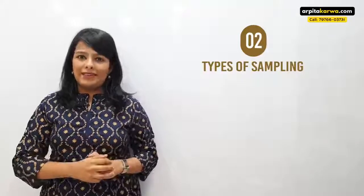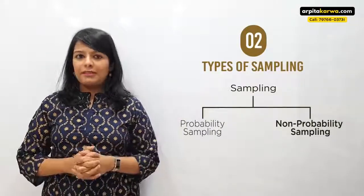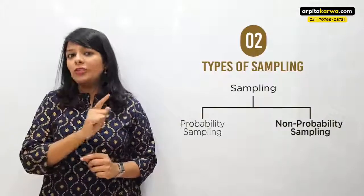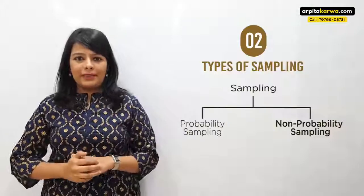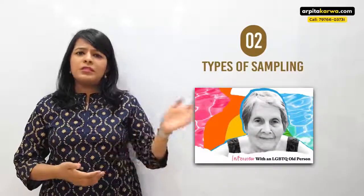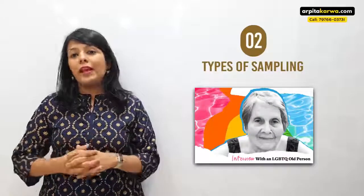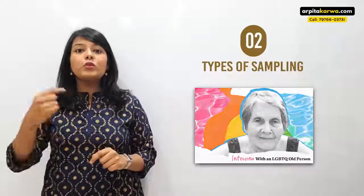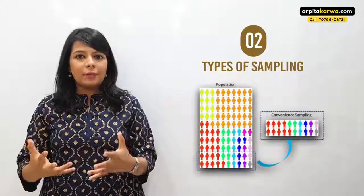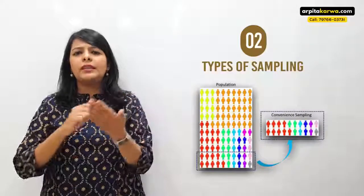Now let us look at non-probability sampling. In non-probability sampling, participants are chosen in non-random ways, so every participant does not have an equal chance of being selected. For example, a research scholar named Kiara wants to know people's opinions about LGBTQ. She goes to a mall near her house and asks the people there about their views. This is called convenient sampling — she is choosing participants based on her own convenience, since the mall is nearby and she is free.